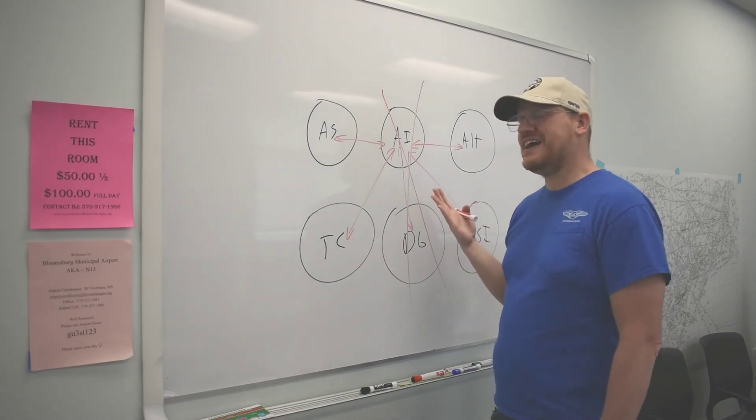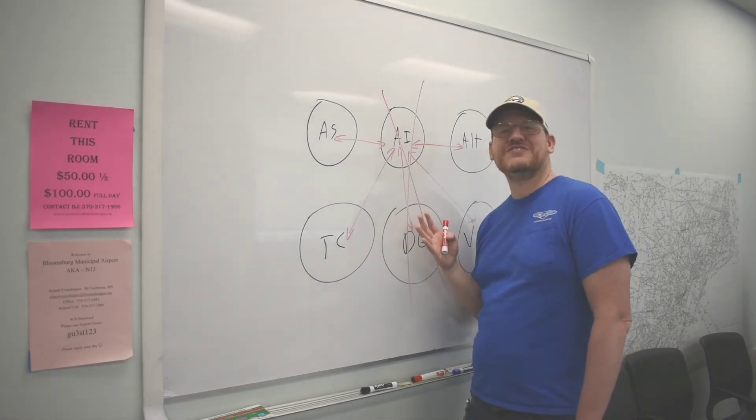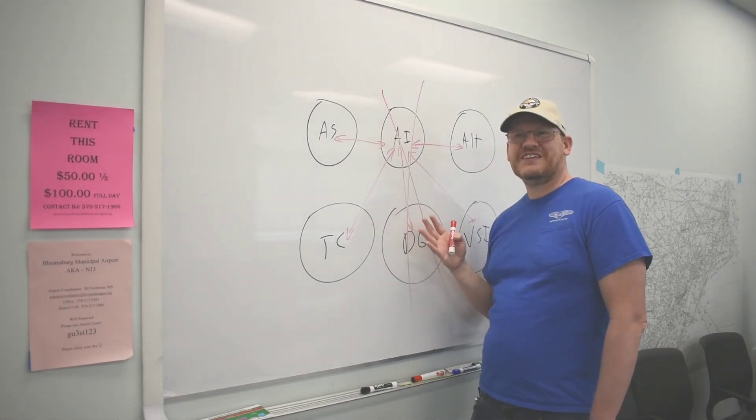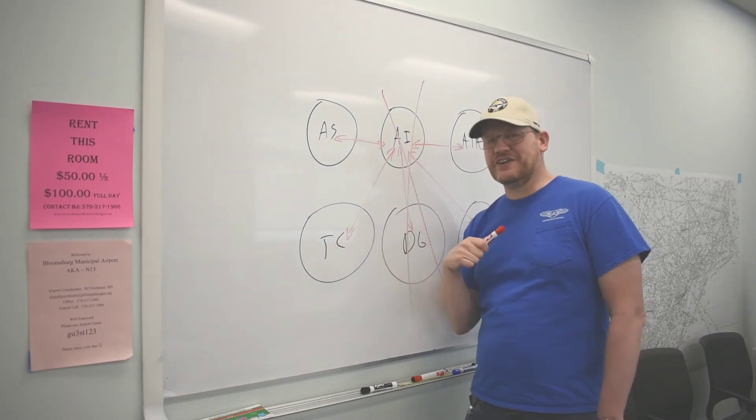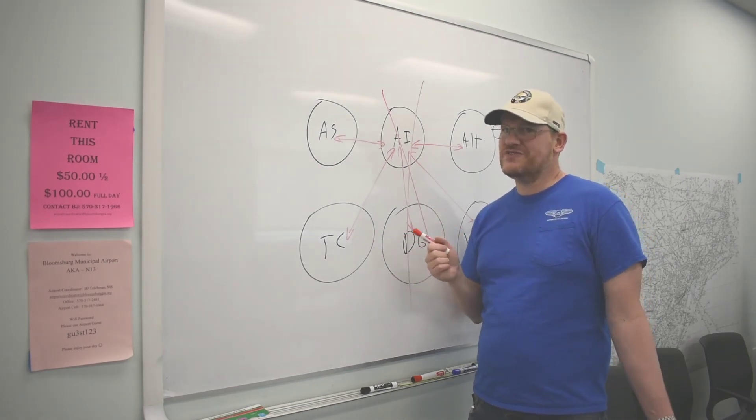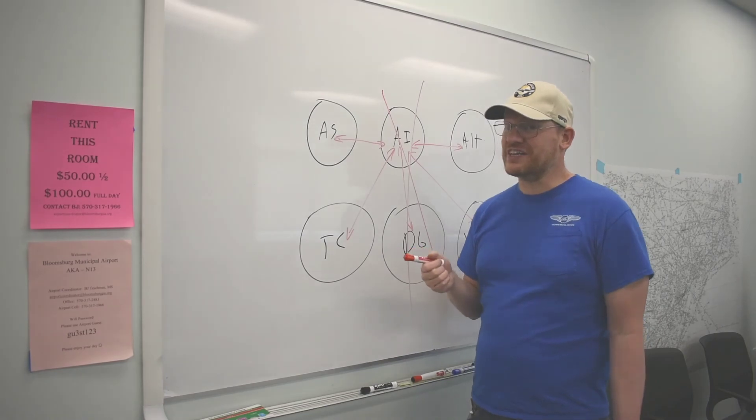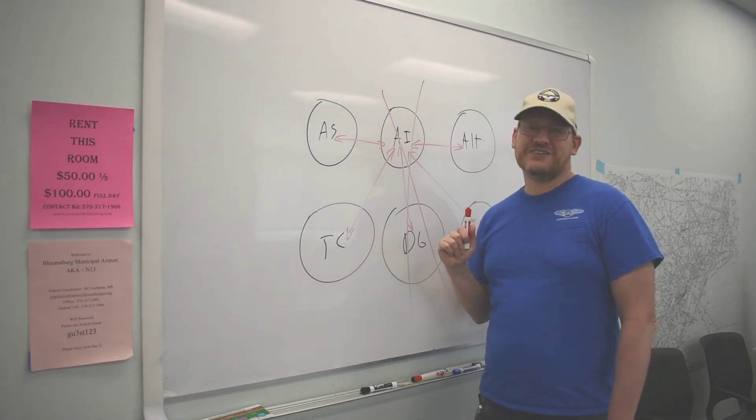I would say the heading bit is probably one of the more frustrating parts to deal with. Not having the bank information. You still have your turn coordinator, though. So, do you know how much you're banking when you bank? No, but you can know if you're not banking or if you're not turning. At least. And you can also know if you're making a standard rate turn.